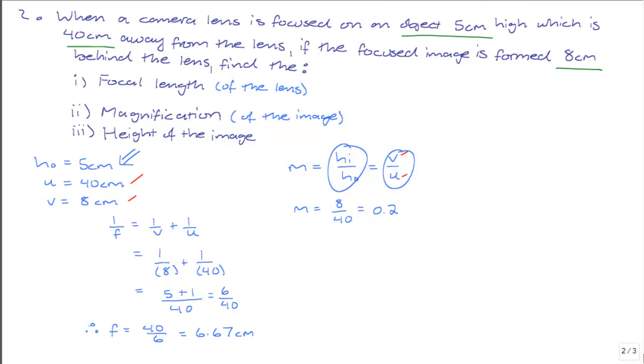Now we know the object height is 5 centimeters and we know the magnification is 0.2, so we can calculate the image height. Image height HI will be equal to magnification times object height, which will be equal to 0.2 multiplied by 5, which will be equal to 1 centimeter.